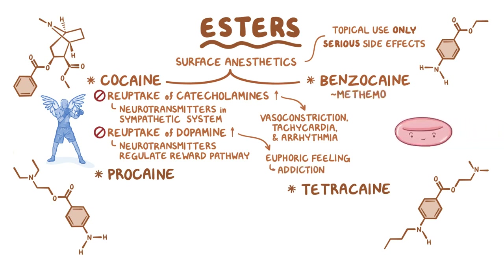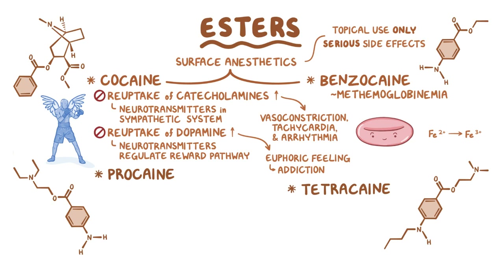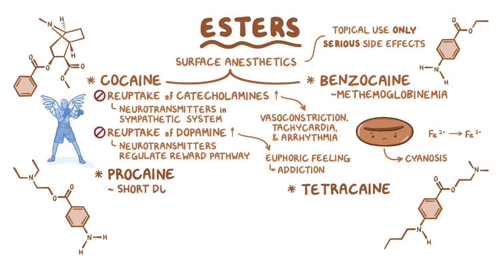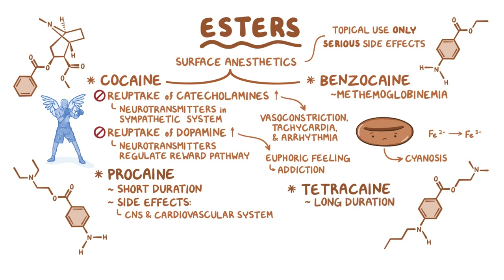Benzocaine can cause methemoglobinemia, where the heme in red blood cells gets oxidized from the iron 2+ state to the iron 3+ state, and they lose their ability to transport oxygen. This causes the blood to take on an unhealthy chocolate color and can lead to cyanosis. Procaine has a short duration of action, but its potential to cause CNS and cardiovascular side effects is high. Tetracaine has a long duration of action and is commonly used in spinal and corneal anesthesia.